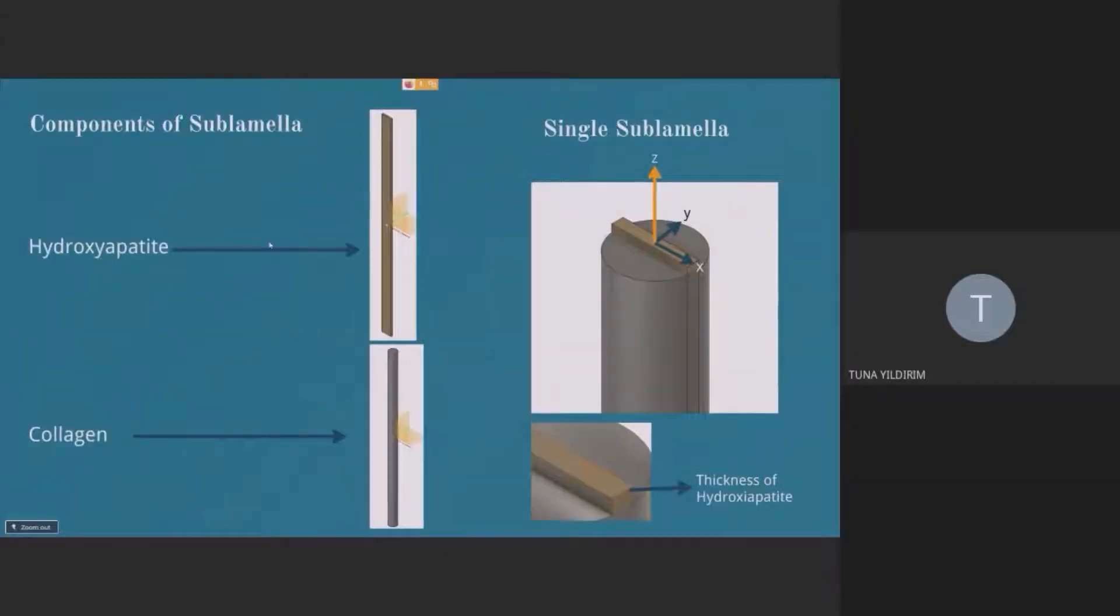In model A, here's my hydroxyapatite in my sublamella, which is the fiber of this composite, and the collagen, which is the matrix of this composite. And we said that dehydration is going to happen, and when dehydration happens, the reduction of length will be in the direction of the thickness of hydroxyapatite.